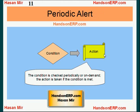Now compare that with Periodic Alert. In the case of a Periodic Alert, your condition is checked periodically or on demand. You can choose your schedule for the condition to be checked — for example, daily, weekly, monthly, etc. Your condition will be checked on schedule or on demand. If your condition results in some exceptions, then the action would be taken.